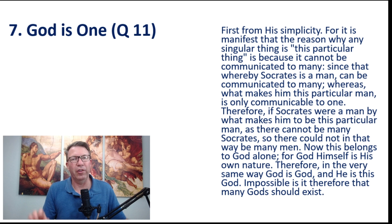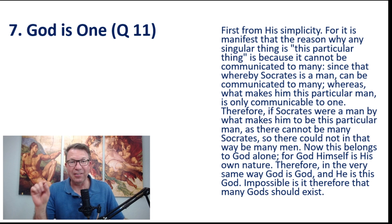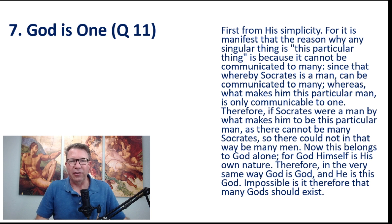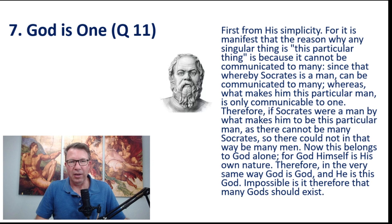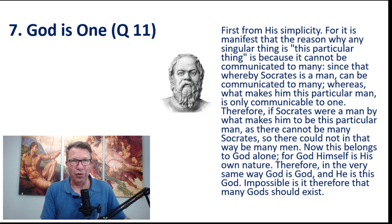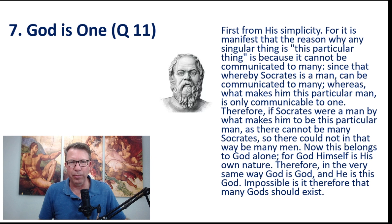He says, first from his simplicity — that was the first of his attributes. 'For it is manifest that the reason why any singular thing is this particular thing is because it cannot be communicated to many.' That bird cannot be communicated to some other creature, because there's only that one bird. 'Since thereby Socrates is a man' — here's a picture of Socrates — 'can be communicated to many.' Socrates' humanity is communicable to you and me and everybody else that's a human being. Billions of people share the same nature as Socrates, but none of us are Socrates. The particular suppositum, or person, Socrates, is unrepeatable.